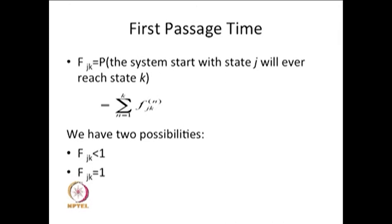This probability I am writing as f suffix j,k. It is the same as the possibility that the system would have gone to state k in n steps for the first time, and the union over all possible first-time steps gives f_jk. In other words, the conditional probability of starting from state j and ever entering state k equals the sum over all possible first-time arrivals at state k across all n.